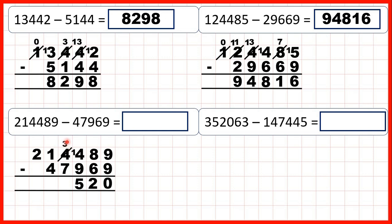We can't do 3 minus 7, so go to the left, one less, one in front — 13 minus 7 is 6. We can't do 0 minus 4, so go to the left, one less, one in front — 10 minus 4 is 6. And now 1 minus nothing is still 1, so we have 166,520.